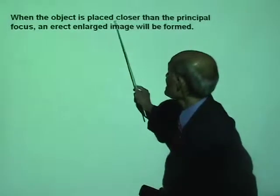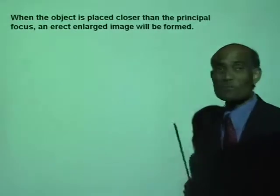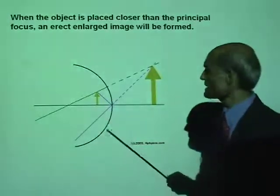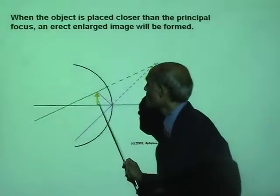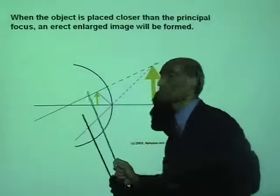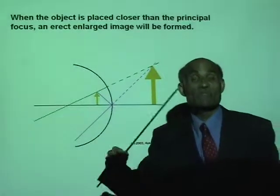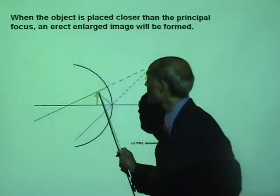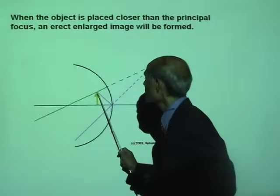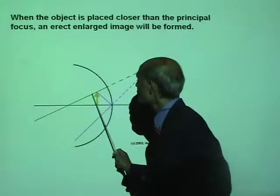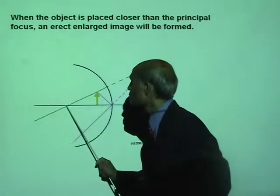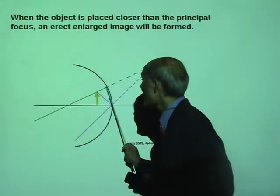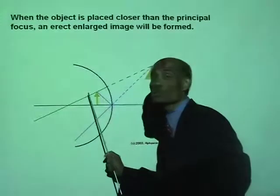When the object is placed closer than the principal focus, you have a different image altogether. Look at the rays I have chosen. If you take a ray that is going to pass through the center of curvature, that will be a ray that falls at right angles to the mirror and will go straight back.